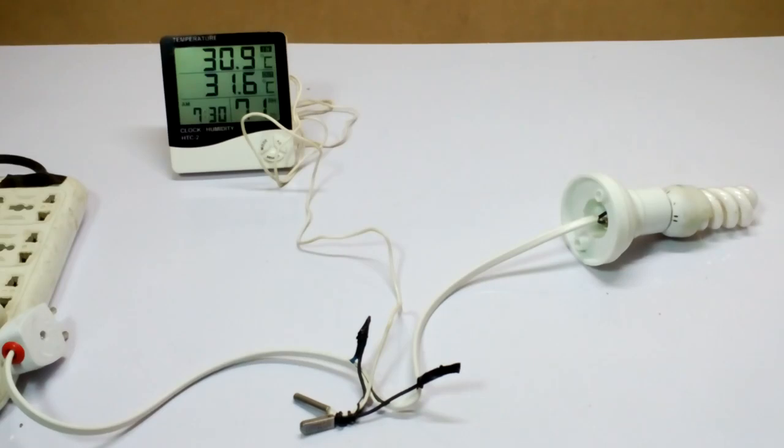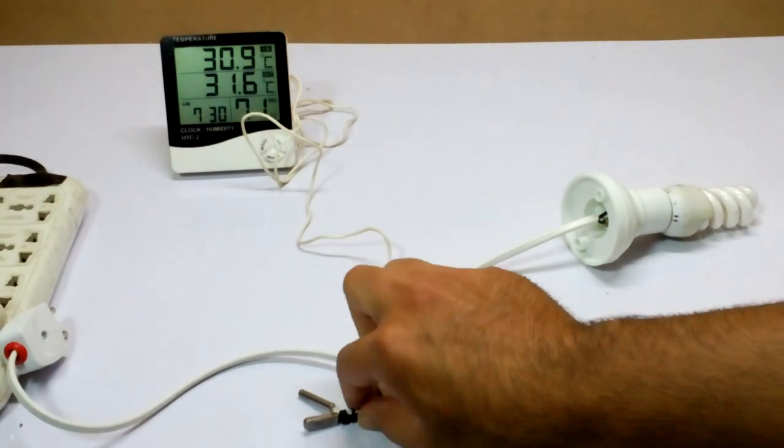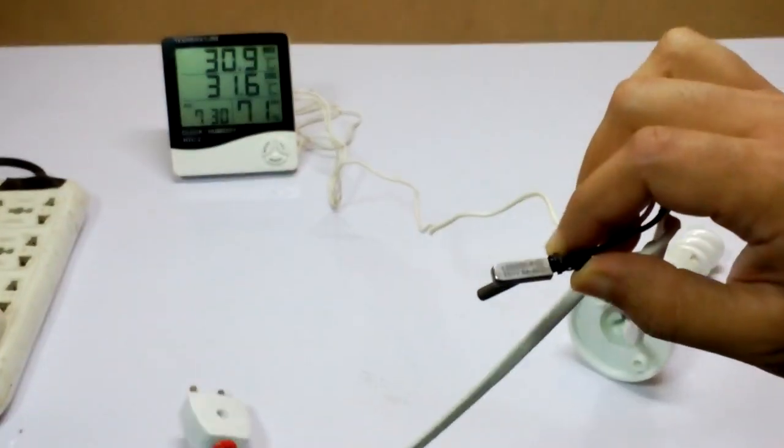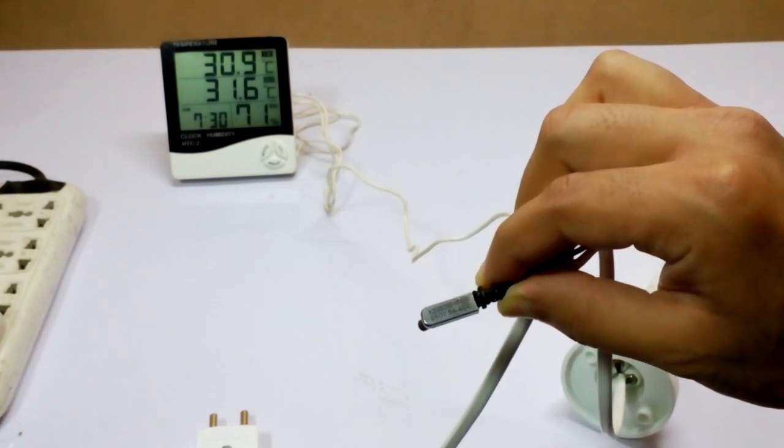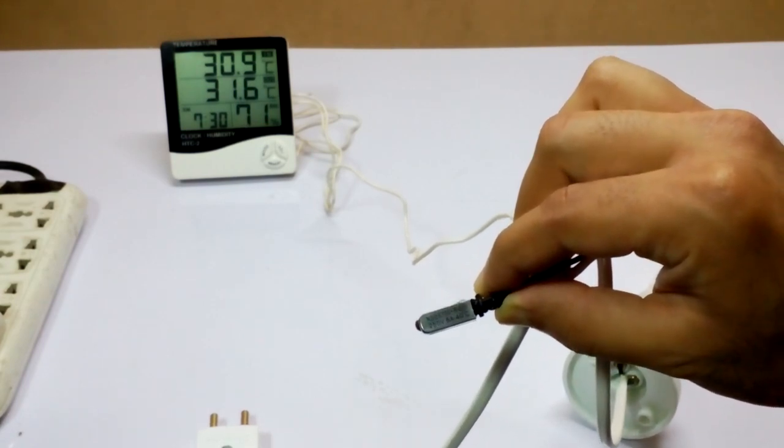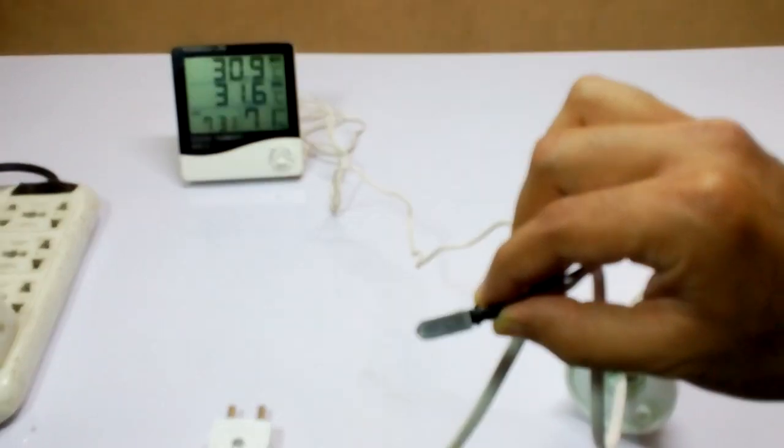Hi guys, my name is Umair and you are watching Umair's workshop. Today I'm going to talk about this bi-metal sensor temperature controller. This bi-metal temperature controller model name is KSD 9700 and it works on 250 volt and maximum ampere is 5 ampere.